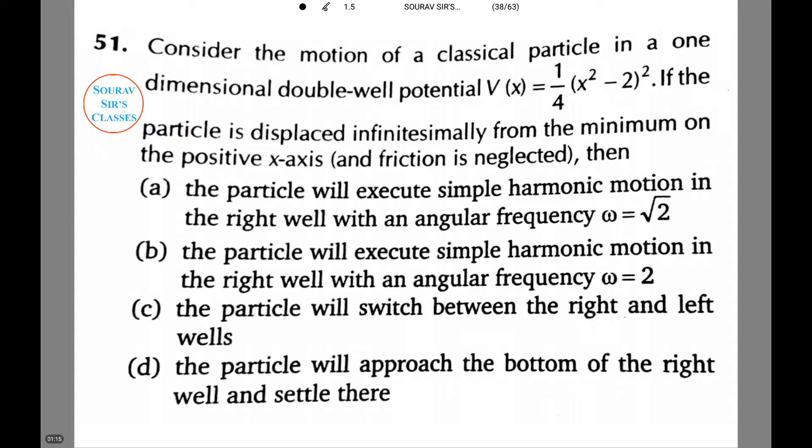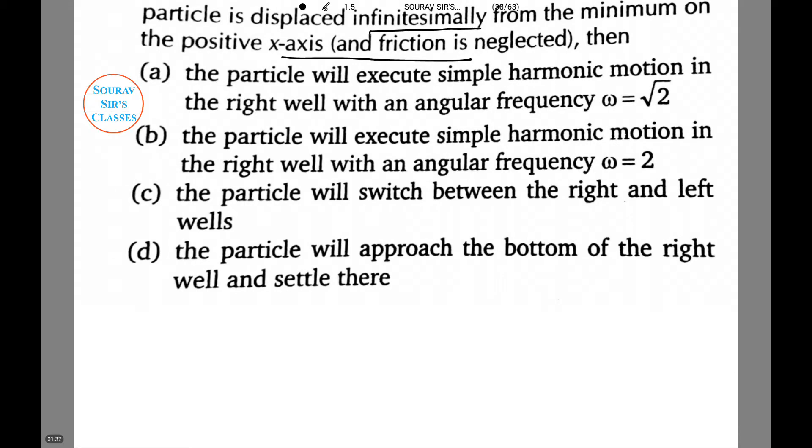Now consider the motion of a classical particle in a one-dimensional double-well potential V(x) equals 1/4(x² - 2)². If the particle is displaced infinitesimally from the minimum on the positive x-axis and friction is neglected, then which of the following is the correct answer? Here V(x) equals 1/4(x² - 2)². Therefore dV/dx equals 2/4(x² - 2) into 2x, which equals x³ - 2x.